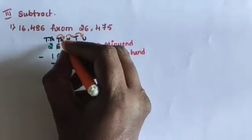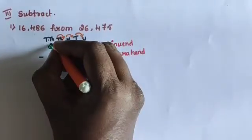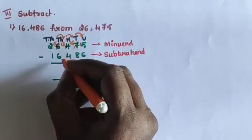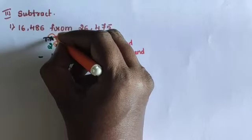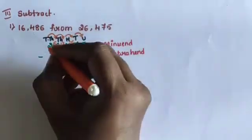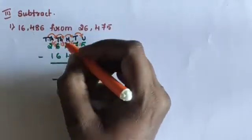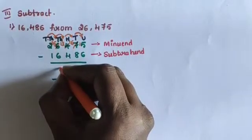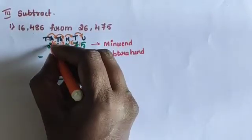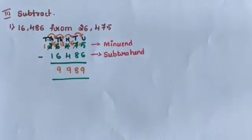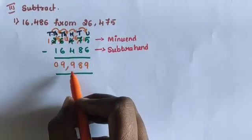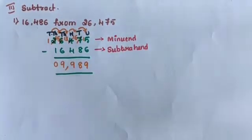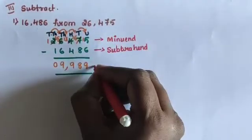Then remaining in the ten-thousands place is 5. 5 minus 6: 5 is smaller, so take carry, make it 15. 15 minus 6 equals 9. Then remaining 1 in the ten-thousands place. 1 minus 1 equals 0. The answer is 9,989, which is the difference of these two numbers.